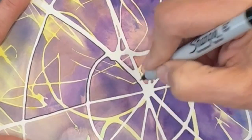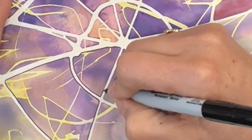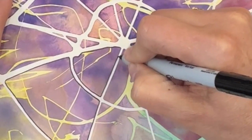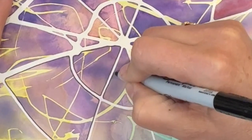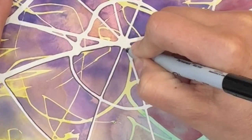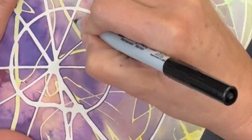So just because the spiderweb is normally pretty straight, you're going to make your lines whatever the rubber cement did. So if the rubber cement was straight, fine. If the rubber cement left a glob, then you trace around that glob. Just whatever is white.